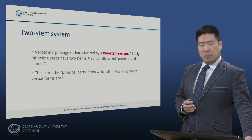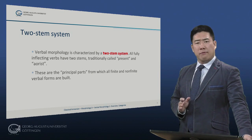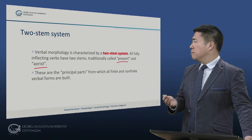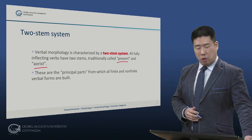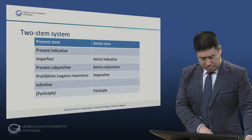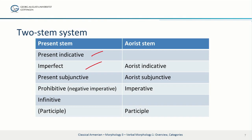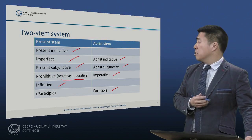Verbal morphology is characterized by a two-stem system, meaning that all fully inflecting verbs have two stems, traditionally called present and aorist. These are the principal parts from which all finite and non-finite verbal forms are built. From the present stem are formed the present indicative, the imperfect, the present subjunctive, the prohibitive or negative imperative, the infinitive, and for some verbs, the participle. The participle, however, is usually formed to the aorist stem, along with the aorist indicative, the aorist subjunctive, and the positive imperative.